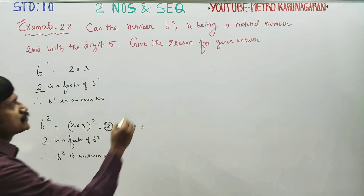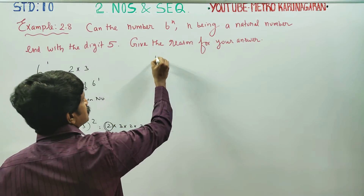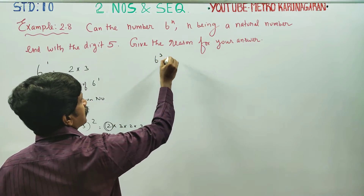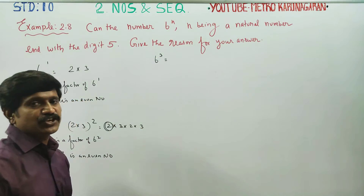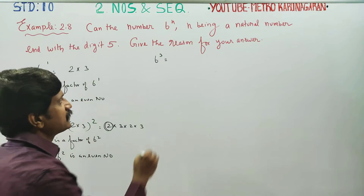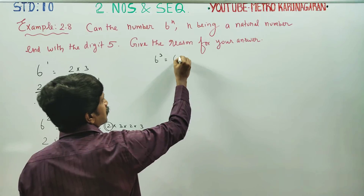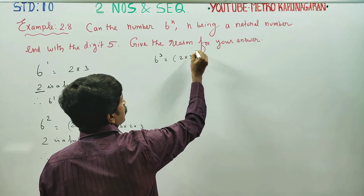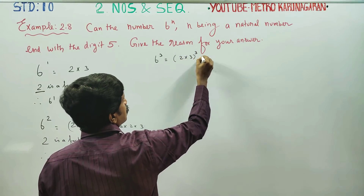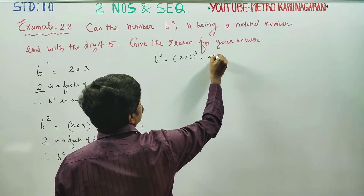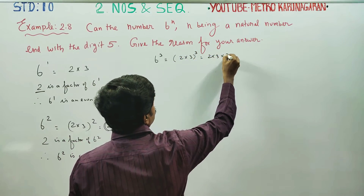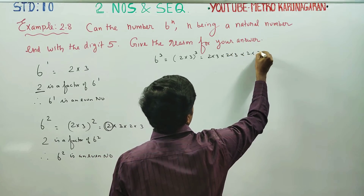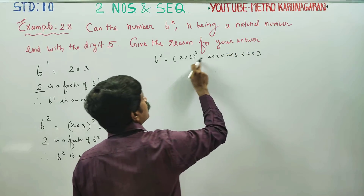6 square is an even number. 6 cube is an even number. 6 cube can be written as 2 into 3, whole power 3. 2 into 3 is an even number.